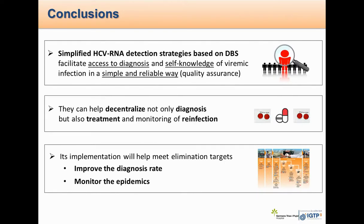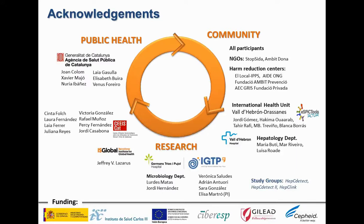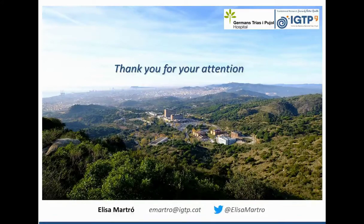In conclusion, simplified HCV RNA detection strategies based on DBS facilitate access to diagnosis and self-knowledge of viral infection in a simple and reliable way, as long as quality can be assured. They can help decentralize not only diagnosis, but also treatment and monitoring of reinfection. Their implementation will help meet elimination targets, not only improving the diagnosis rate, but also monitoring the epidemic — as we also use DBS to estimate the cascade of care in people who inject drugs. This has been an effort of multidisciplinary collaboration, and I thank all involved people and funding sources.